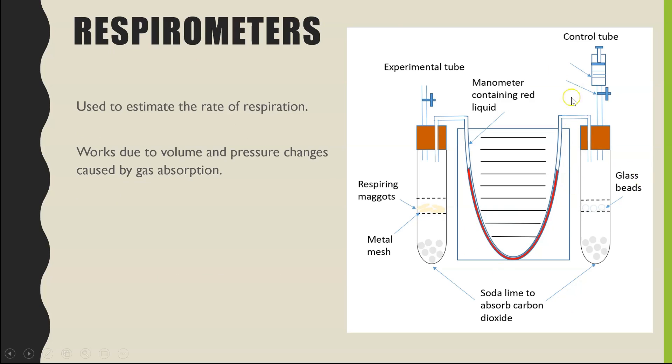So we're going to be looking at the use of a respirometer today. We're going to go through all of the pieces of equipment here, the purpose of each, and then what we'll be measuring. And it's all to do with changes in volume and therefore changes in pressure caused by gases absorbed by whatever living organism is placed inside of this experimental tube.